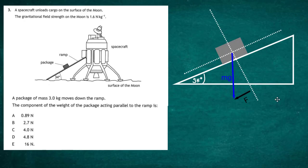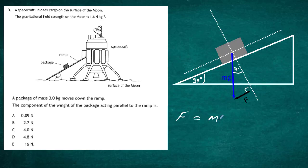We have mg, the force parallel to the ramp, and using similar triangles — if this angle is 34 degrees, that angle in the triangle must also be 34 degrees. It's a right-angle triangle, and the force parallel to the slope is going to be mg times sine of the angle of the slope.